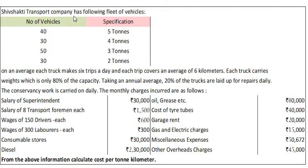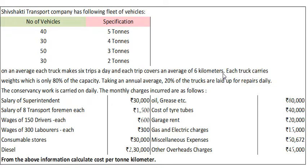Shivsakti Transport Company has the following fleet of vehicles: 40 vehicles having 5 tons capacity, 30 vehicles having 4 tons capacity, 50 vehicles having 3 tons capacity, and 30 vehicles having 2 tons capacity. On an average, each truck makes 6 trips a day and each trip covers an average of 6 km. Each truck carries weight which is only 80% of the capacity.